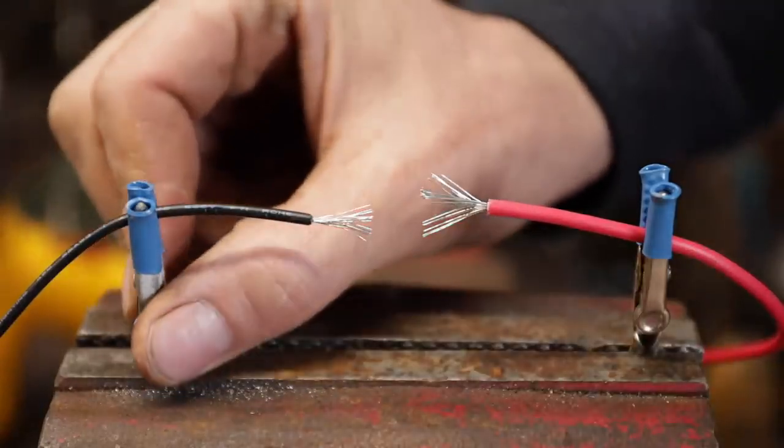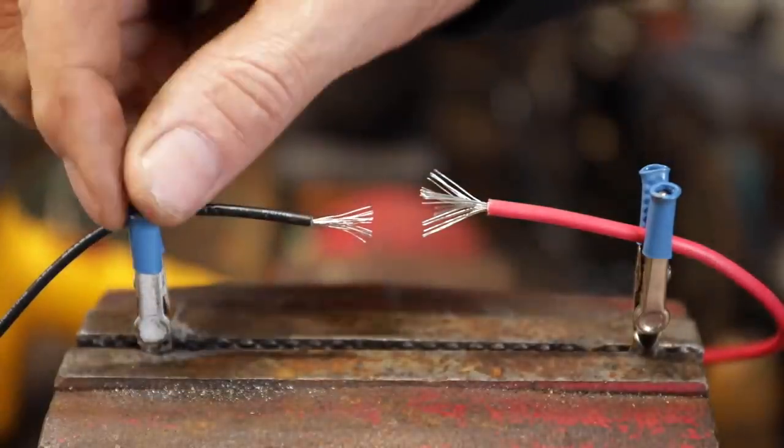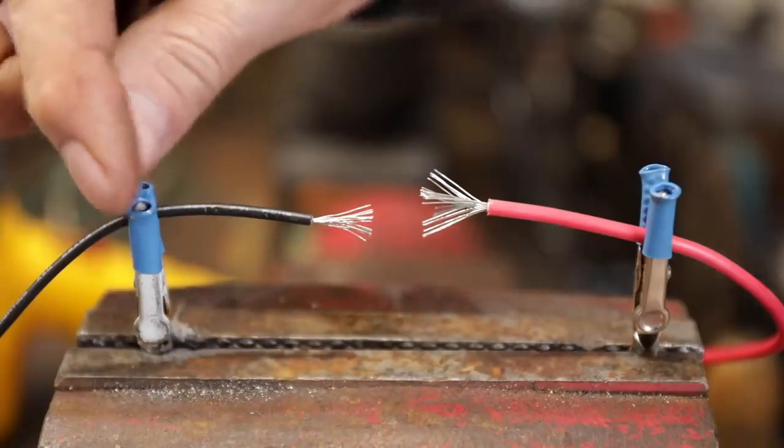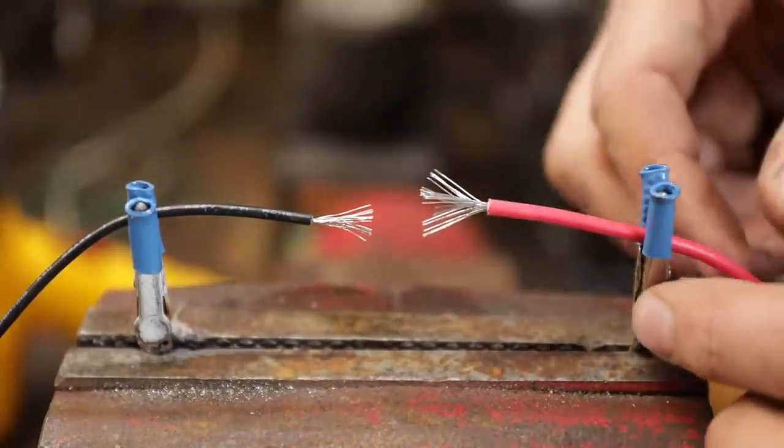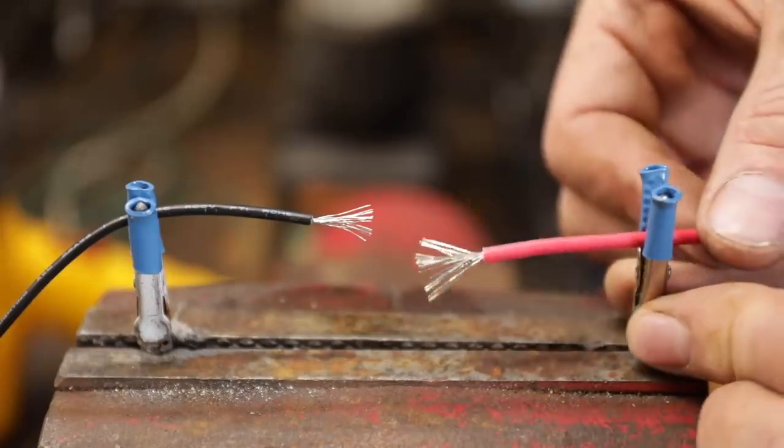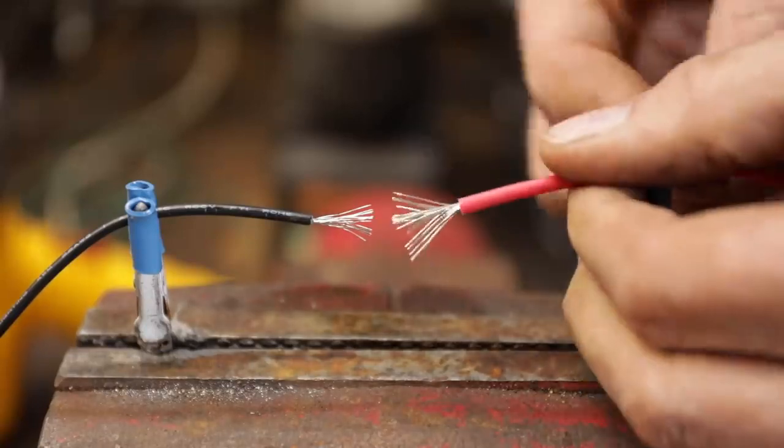Some of these alligator clips have a pretty tight spring on them, so take some shrink tubing on the ones you're going to keep in your kit and just melt it on there. That way they won't mess up your wire. This is going to hold things securely and you're going to get a whole lot better job.